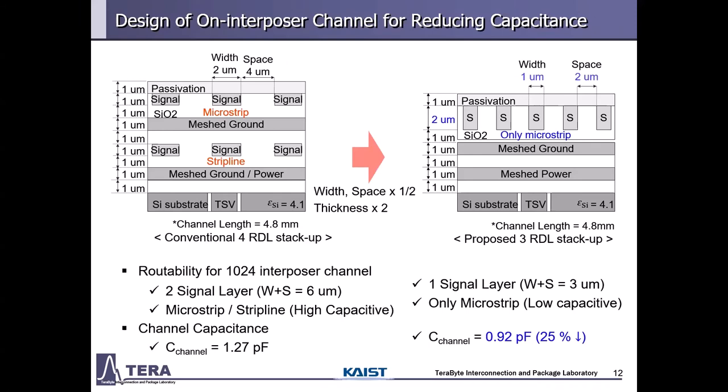This slide shows the design of the interposer channel. The interposer channel length is fixed at 4.8mm, and routability is important because 1,000 channels must be routed within a small space. The conventional 4-RDL stackup uses microstrip and stripline for routing, so channels have high capacitance due to stripline and channel width. The proposed 3-RDL stackup reduces channel capacitance by using only one signal layer routing, reducing width and space by half. The thickness of the sub-channel is doubled to compensate for high resistance. This stackup uses only a microstrip structure with small widths, reducing channel capacitance by 25%.